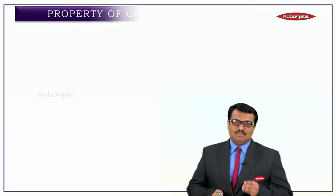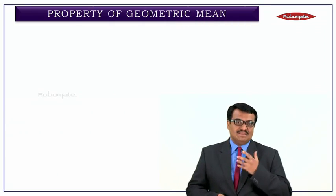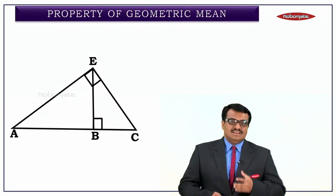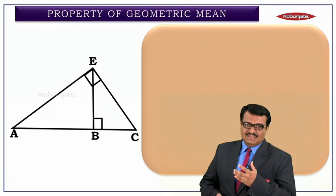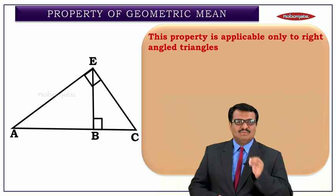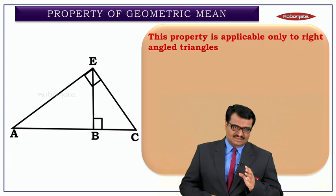Before doing the next sum, we have to learn one property: the property of geometric mean. This property of geometric mean is applicable only to right-angled triangles.